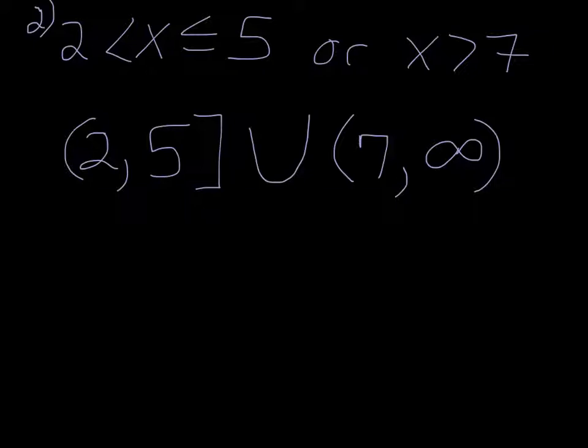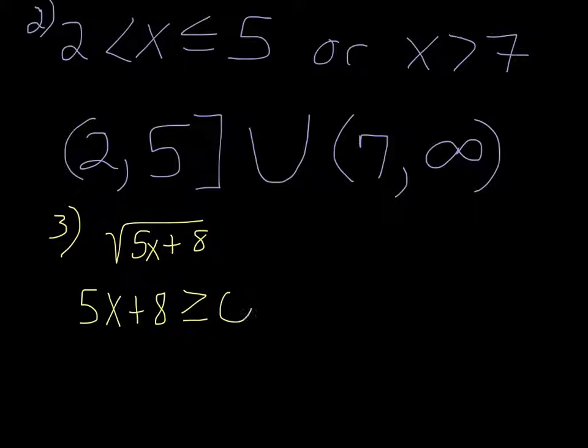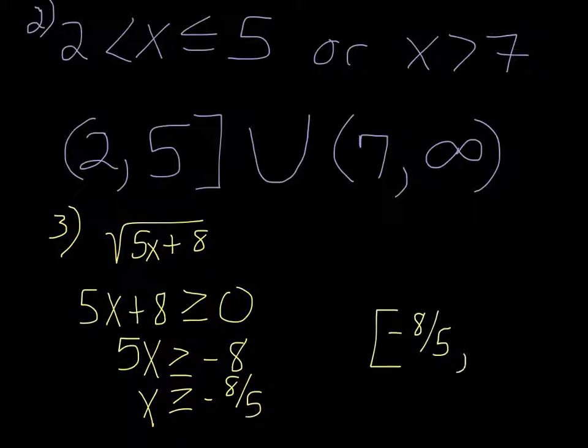Number 3, the domain of the square root of 5x plus 8. You need to take the inside of that expression and set it greater than or equal to 0. Because we can't take the square root of a negative, so we want to find all the values where that expression is going to be positive or 0. So we get 5x greater than or equal to negative 8, or x is greater than or equal to negative 8 over 5. And then you just want to put that in interval notation, so negative 8 fifths, comma infinity.